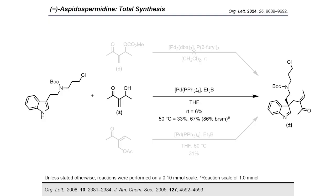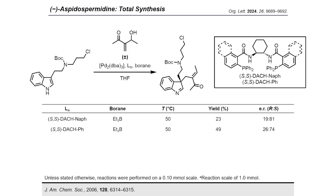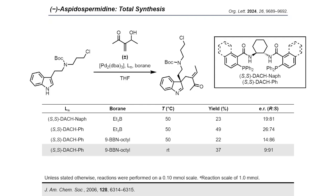We then attempted to render the allylic substitution reaction anti-selective. From screening of chiral ligands, the Trost DACH-naphthyl and DACH-phenol ligands were found to afford the indolinine product in comparable enantiomeric ratios. Since the indolinine product was obtained in high yield with the DACH-phenol ligand, this ligand was taken forward in optimization studies, in which variation of other reaction parameters was investigated. It was found that increasing the steric bulk of the borane additive from triethylborane to 9-BBN-octanol resulted in increased enantioselectivity but reduced yield, whereas lowering the temperature from 50°C to room temperature increased both the enantioselectivity and the yield.